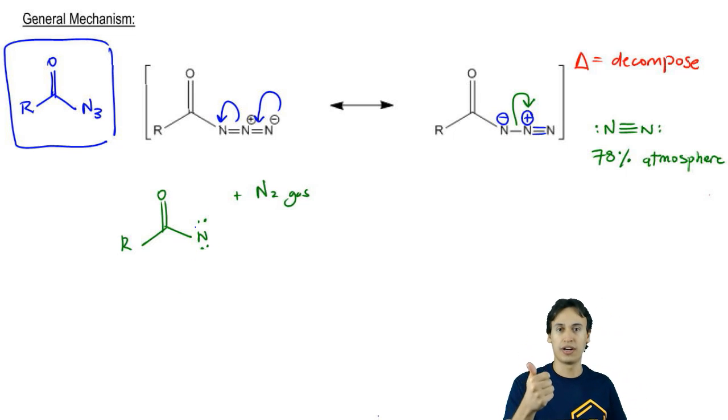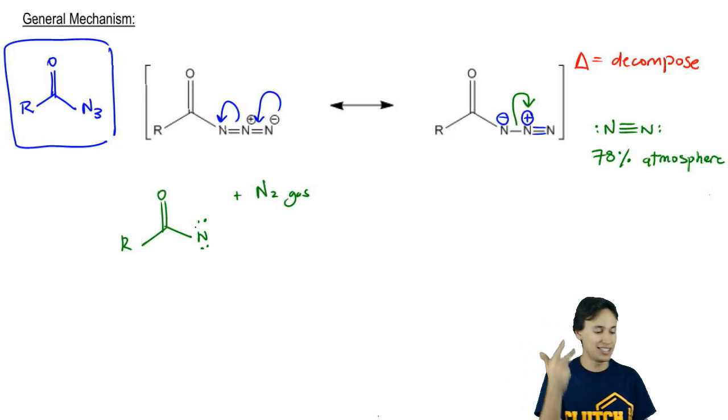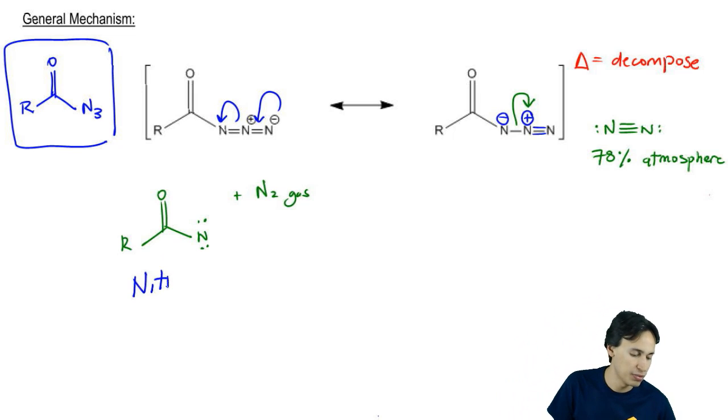If you were to count: lone pair is two, lone pair is two, bond is two, that's six. We need eight. This is a very reactive intermediate called a nitrene.